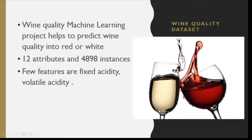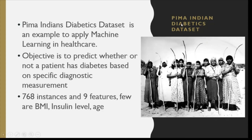Next is the Wine Quality dataset. As you can see in the figure, we have to classify whether the wine is white or red. You have 12 attributes as columns and more than 4,000 rows. The features include properties like acidity, volatile acidity, and certain chemical properties on which you classify the wine.